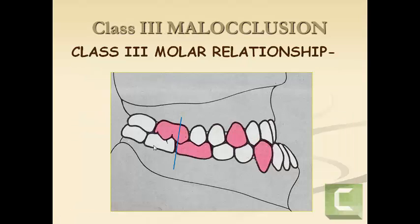In class 3 malocclusion, you have a class 3 molar relationship where the mesiobuccal cusp of the upper first permanent molar falls in between the first and second mandibular molars. You can also see a class 3 canine relationship where the mesiobuccal cusp of the upper canine falls way distally to the distal cusp of the lower canine.